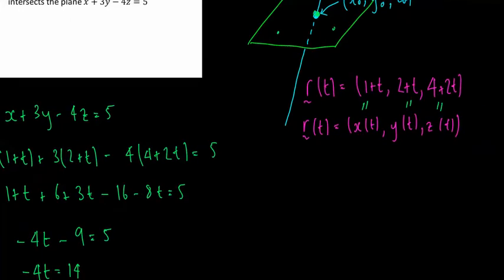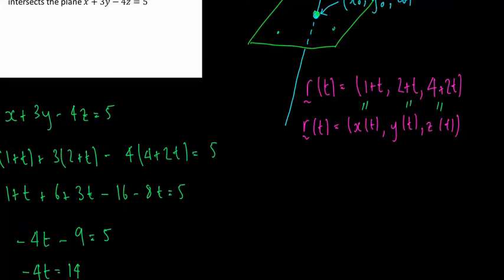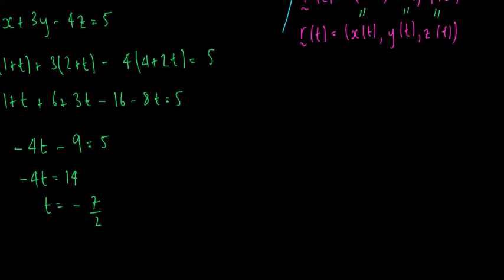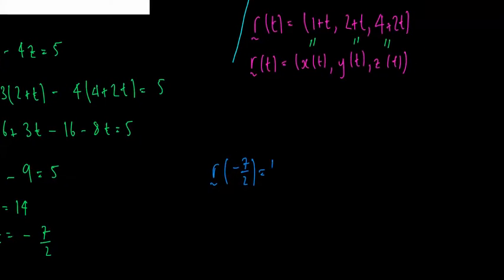How do we get the point? Well, we know the T value of the line, and that must be the point on the plane. So we just need to evaluate the line at T equal to negative 7 over 2. So that equals, in the I component, 1 minus 7 over 2, 2 minus 7 over 2, and 4 plus 2 times negative 7 over 2.